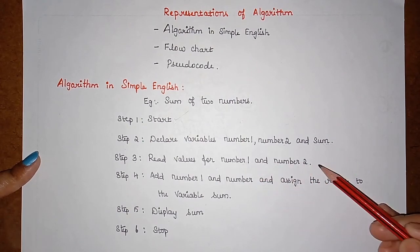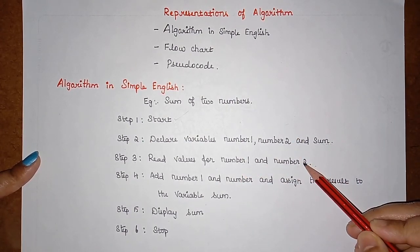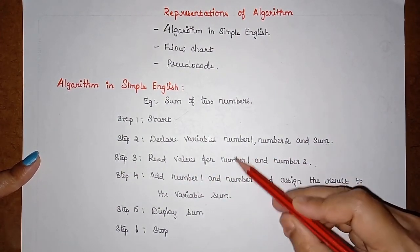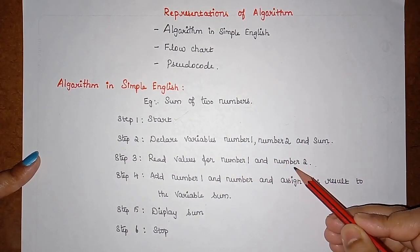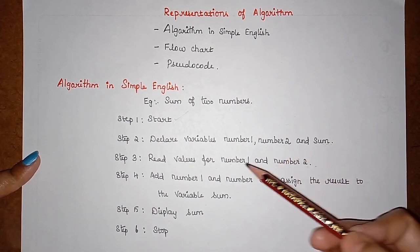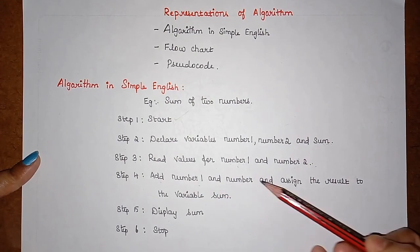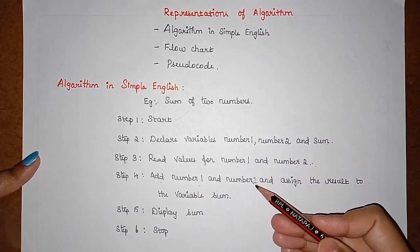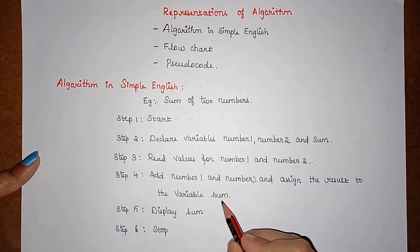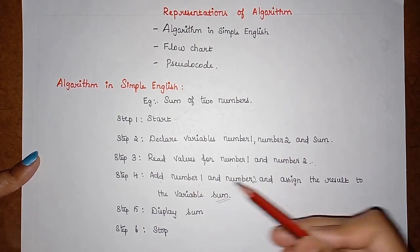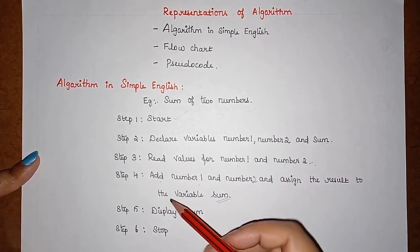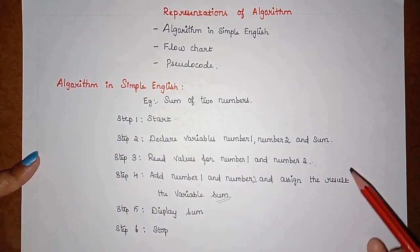Step three is to read values for num1 and num2 — since we don't know their values, we need to get them as input. Step four is to add num1 and num2, then assign the result to the variable sum — that is: sum = num1 + num2. After adding the two numbers, the result is stored in the variable sum.